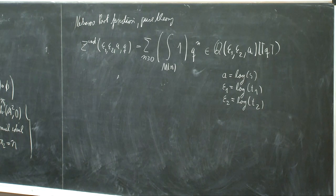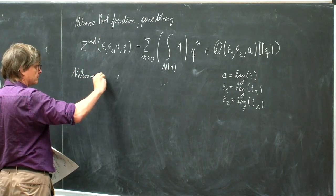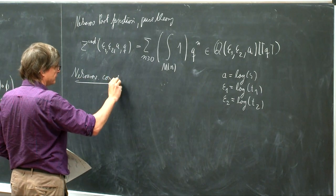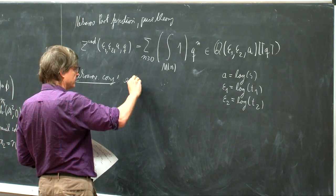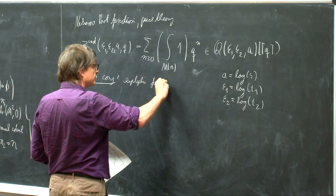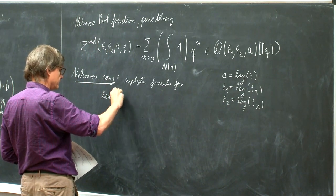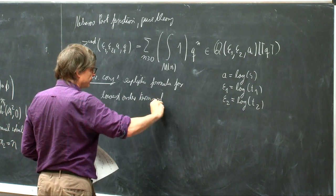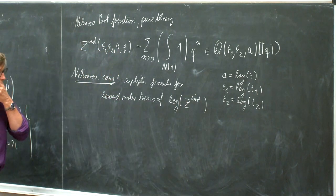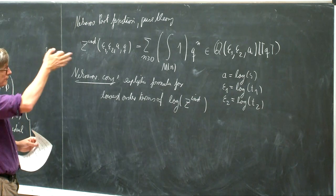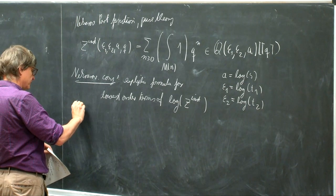So this is the simplest case. Now the Nekrasov conjecture, basically what I would call the Nekrasov conjecture for this case, would be an explicit formula for the lowest order terms of the logarithm of this thing — the lowest order terms in epsilon_1, epsilon_2. For this particular case there are several proofs of such a formula; one I know is by Nakajima and Yoshioka.